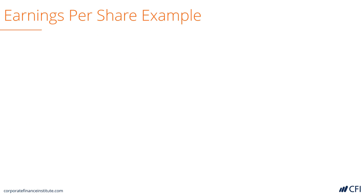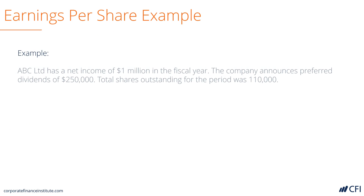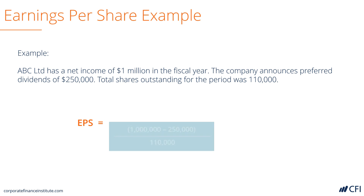Let's look at earnings per share in an example. A company has net income of $1,000,000 and announces a preferred dividend of $250,000. The total shares outstanding for the period were 110,000.